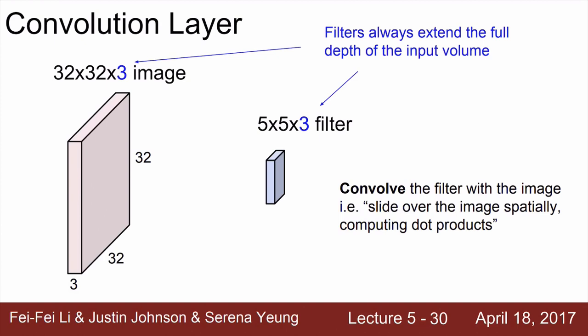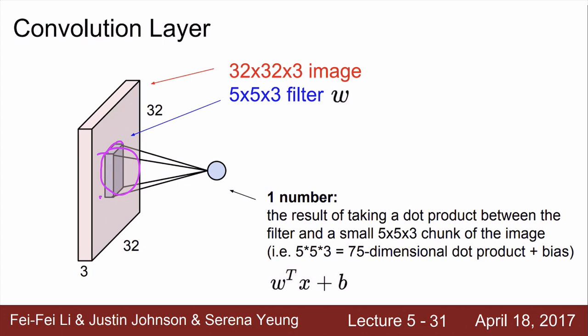For images with depth — for example RGB with depth 3 — the idea is the same. We use a filter with the same depth. Using this filter, we look at a small portion of the image and do a dot product. We just have more numbers to operate on: for a 5 by 5 filter with depth 3, that's a 75-dimensional dot product. We can also add bias to get one single value.